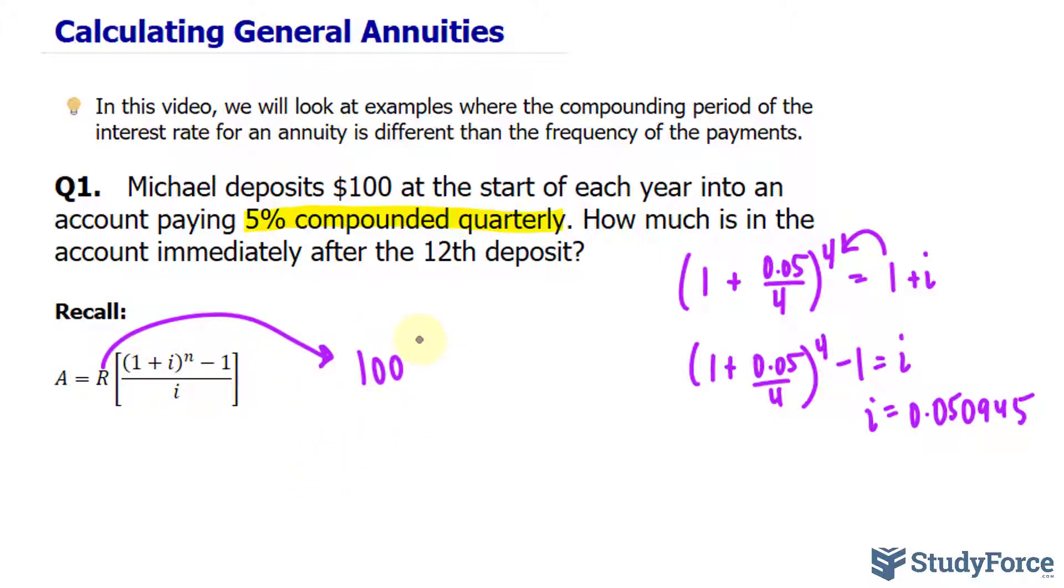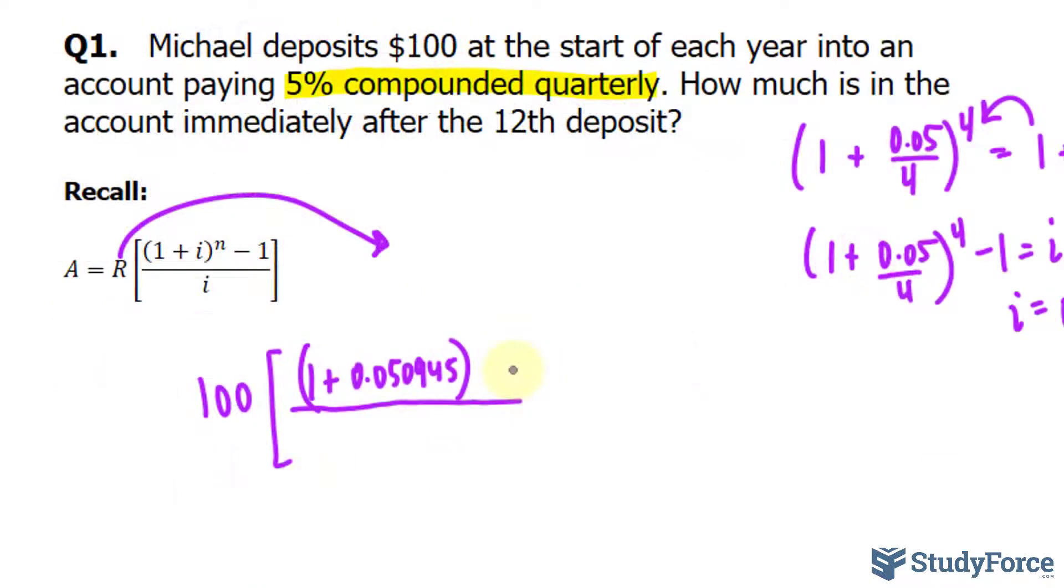Focusing on there, we have 100 times, in the top position I'll just move this underneath so I have more room, 1 plus our interest rate. Notice that this interest rate corresponds to the frequency of the deposits, so I don't need to divide it by anything. Minus 1, and that's being raised to the power of 12 because there are 12 deposits. The interest rate gets written down underneath again.